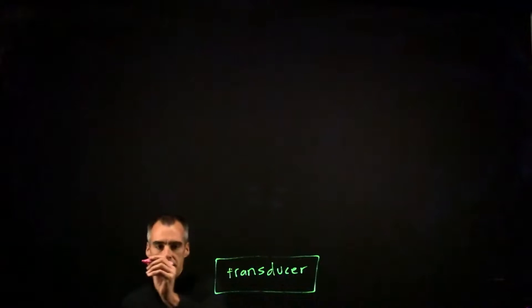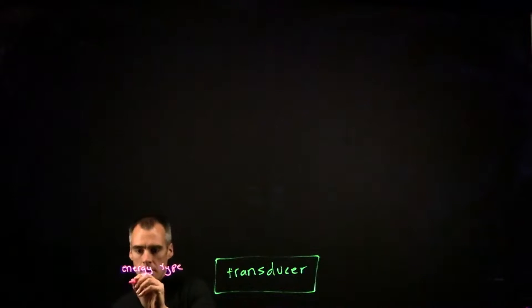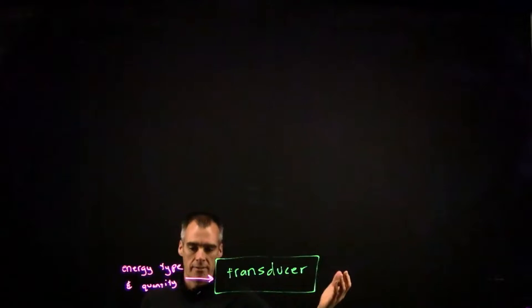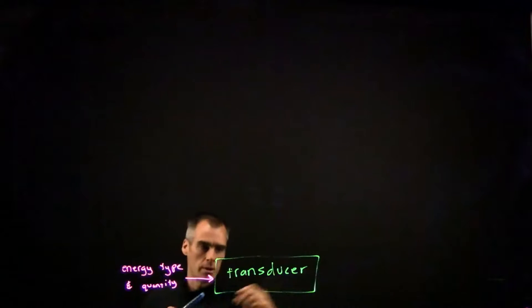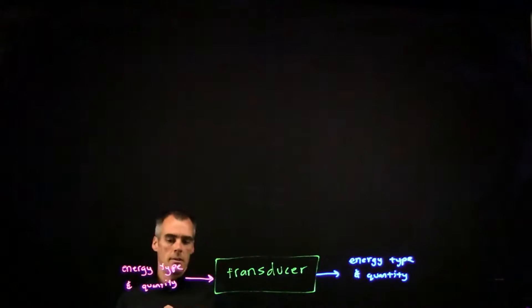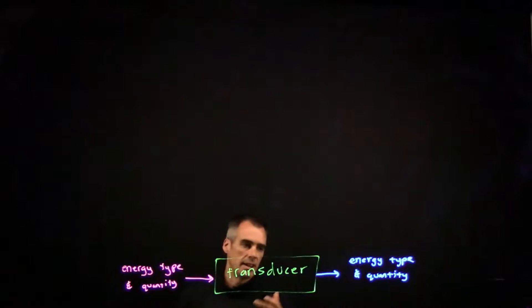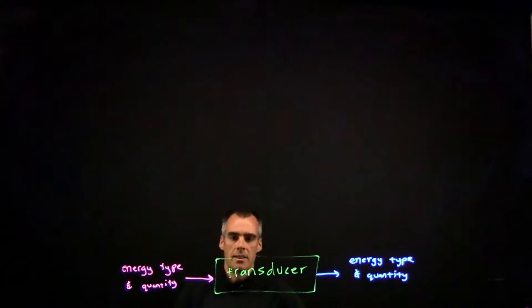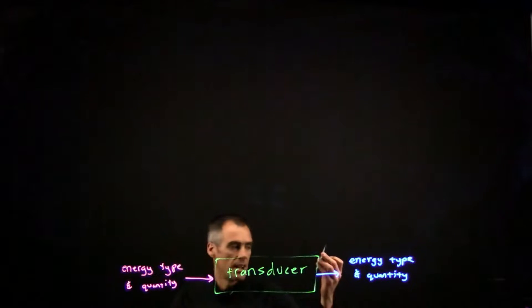Let me give you a quick introduction into transducers — basically what they are, and a quick example of a simple transducer using an amplifier. All a transducer is, is something that takes an energy of a certain quantity and type, and as our output we have energy of a certain type and quantity. A transducer could change the energy type, the quantity, or both, and there are tons of examples of transducers everywhere.